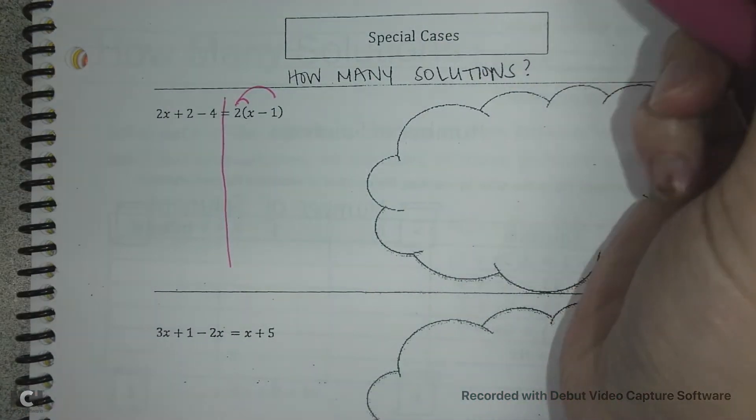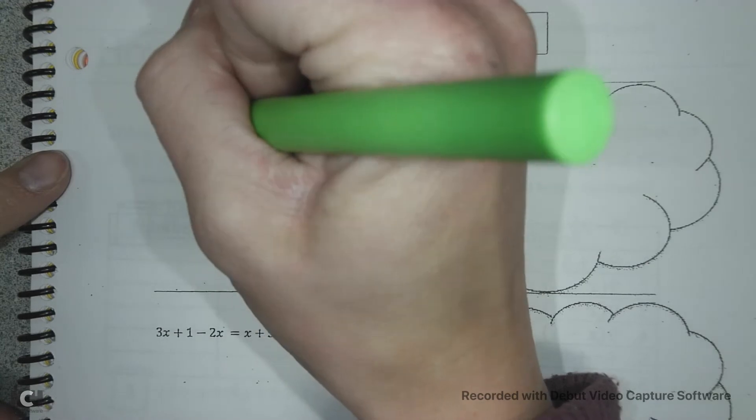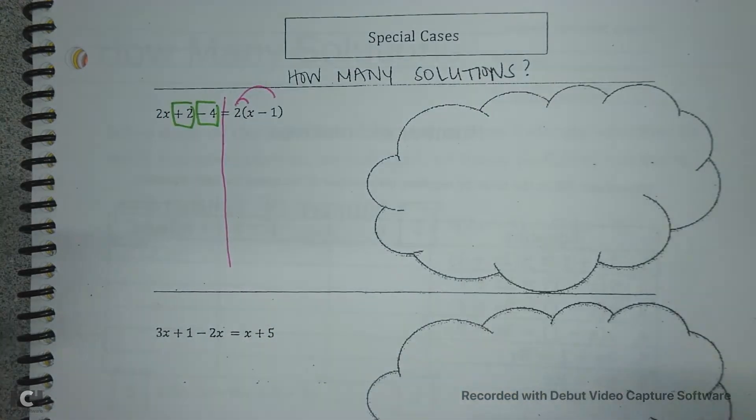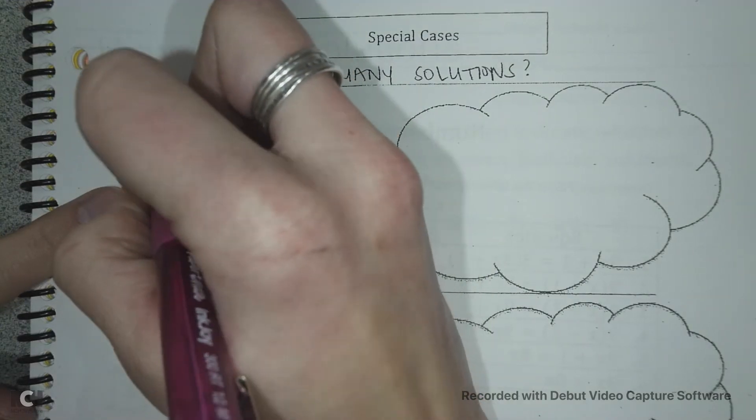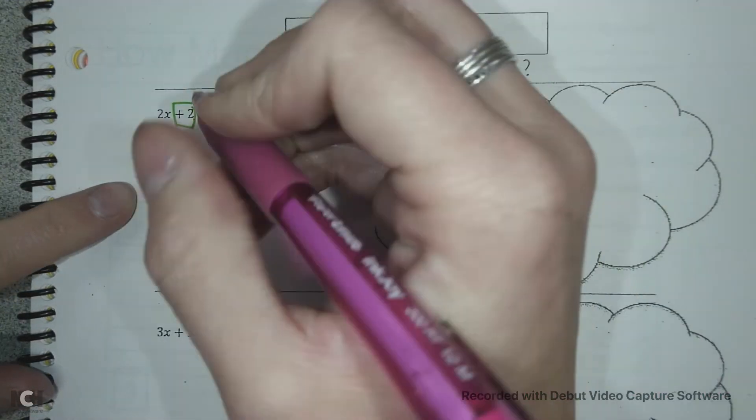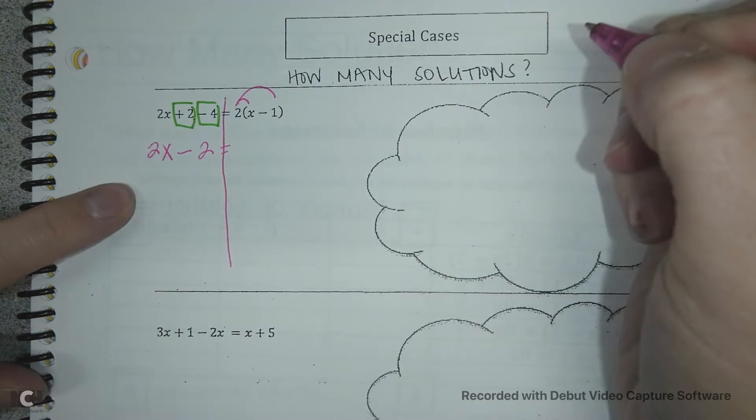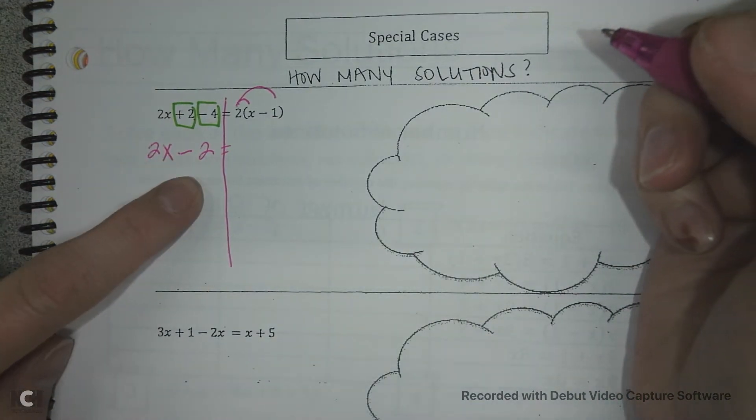Over here I've got some like terms. I have a positive 2 and a negative 4. So I'm going to combine those guys as well. I keep my 2x and then positive 2 minus 4 is negative 2 or minus 2. Remember negatives and minuses are the same thing.